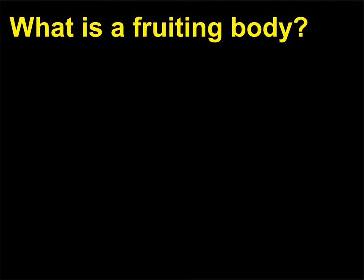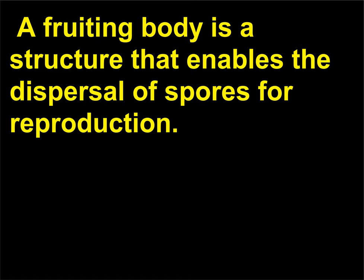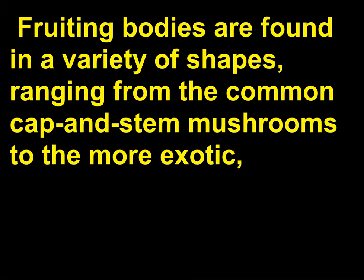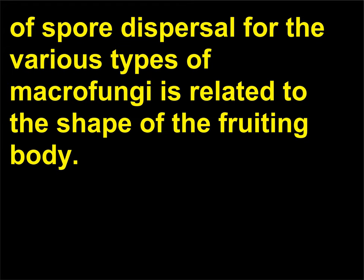What is a fruiting body? Macrofungi such as mushrooms and toadstools produce fruiting bodies. A fruiting body is a structure that enables the dispersal of spores for reproduction; it is the structure of a fungus that is visible above the ground. Fruiting bodies are found in a variety of shapes, ranging from the common cap and stem mushrooms to the more exotic antler-like, coral-like, cage-like, trumpet-shaped, or club-shaped mushrooms. The method of spore dispersal for the various types of macrofungi is related to the shape of the fruiting body.